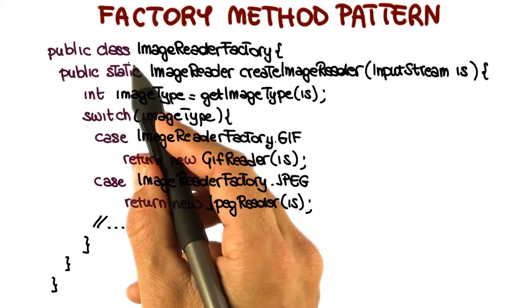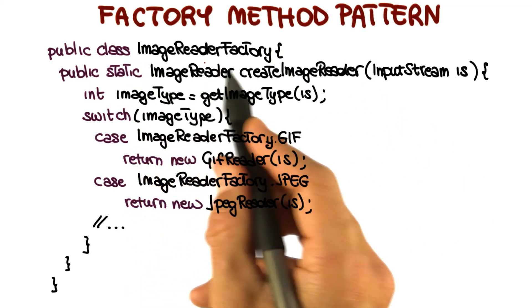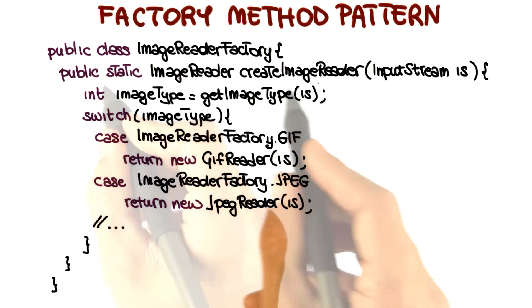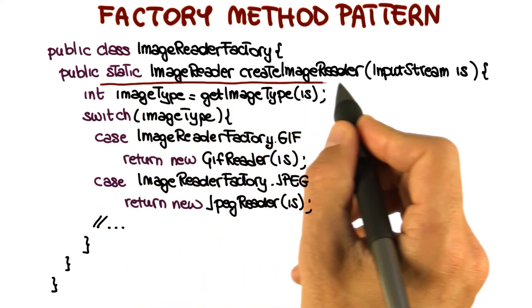The example I'm going to use consists of a class called ImageReaderFactory, which provides a factory method, createImageReader.